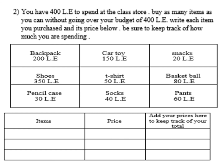I need a pair of shoes. Its price is 350 pounds — 350 is less than 400, so I can buy it. The remaining budget is 50 pounds: 400 minus 350 equals 50. Now I can choose another item. I'll choose a t-shirt, which is 50 pounds. So 350 plus 50 equals 400 — yes, I can buy it because it is exactly my budget.